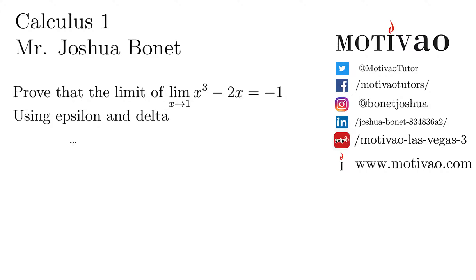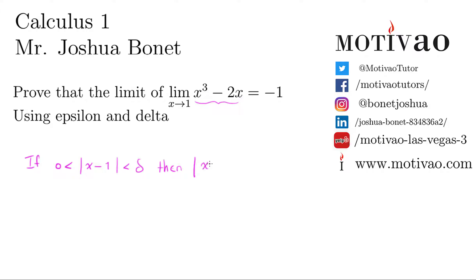So we write: if 0 is less than the absolute value of x minus c — where c is the value which x approaches, so in this case 1 — and it's less than delta, then the absolute value of f(x) minus L is less than epsilon. Here f(x) is x³ minus 2x, and L is negative 1.